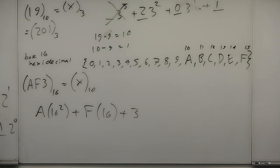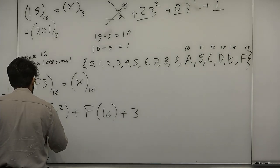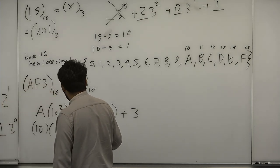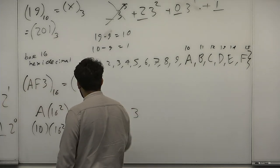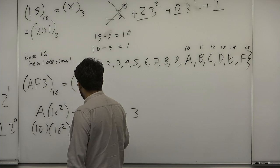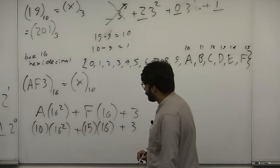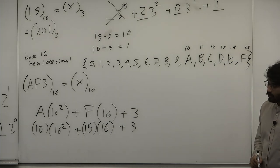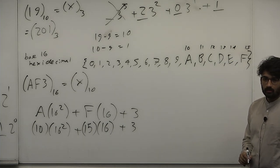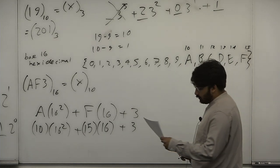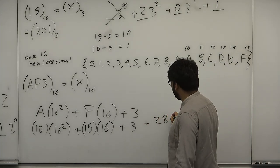It doesn't really matter that we use A for 10, but since we're going to work out in base 10 and we all know how to use base 10, we'll rewrite this in base 10. So this is 10 times 16 squared plus F is 15. So I'm going to go look at my little table there. 15 times 16 and then plus 3. Can anyone do that in their head? No? Well, I didn't expect you to. This is 2,803.